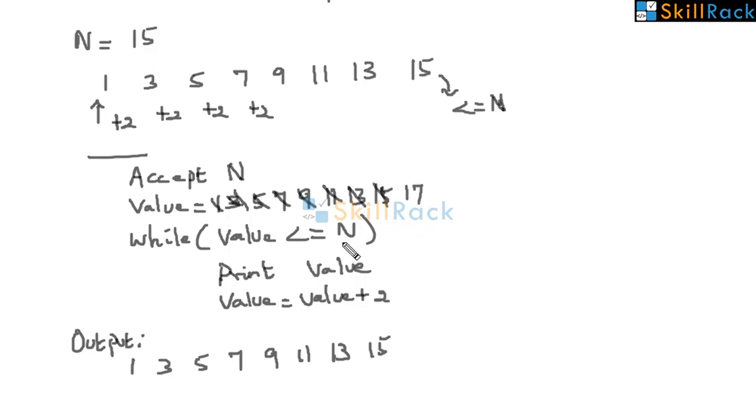Now 17 less than or equal to 15. It is false. So it comes out of the loop and the program terminates.